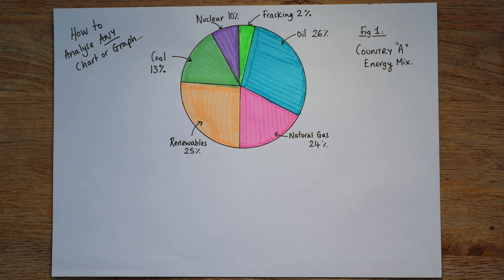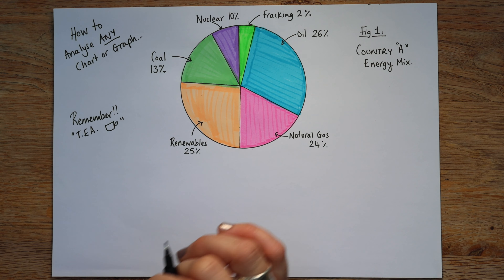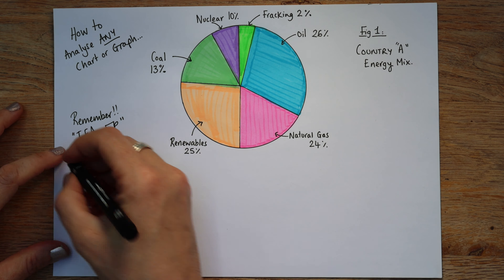So I've made a pretend energy mix. An energy mix for a country is linked to paper two, and this is where we break down where they're getting their electricity from. In country A — figure one — they're getting a lot of their energy from oil, natural gas, and coal, so about two-thirds of it, about 65%. A little bit from fracking, which is relatively new, and 10% from nuclear, and about a quarter of their electricity needs are coming from renewables — from different sources like solar or wind power.